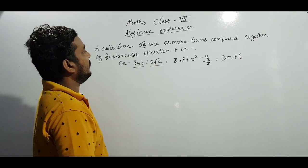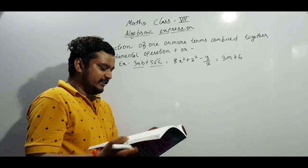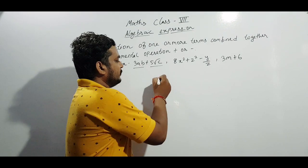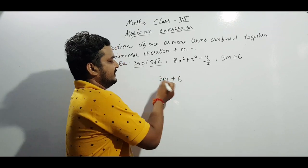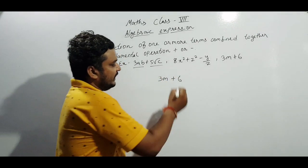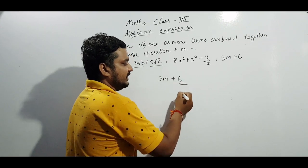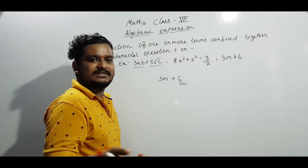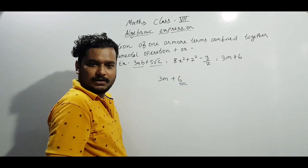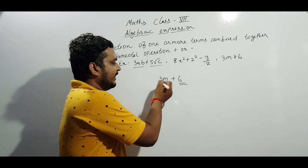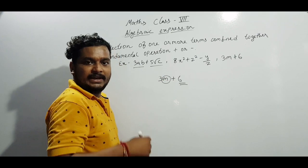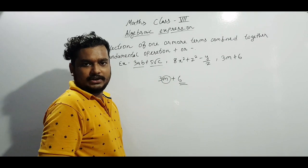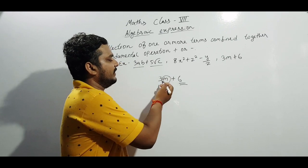We need to know about some terms like constant and variable. In the algebraic expression 3m plus 6, the number 6 is constant. A constant is a numerical value — it can be an integer, fraction, or any real number. And m is the variable. A variable is denoted by any alphabet or symbol.